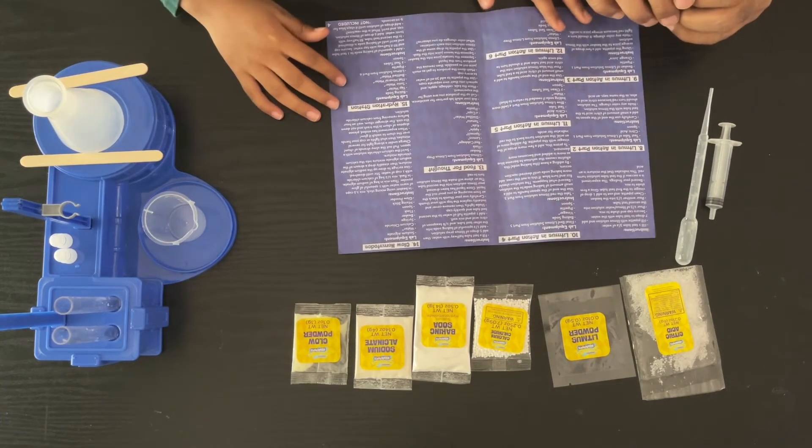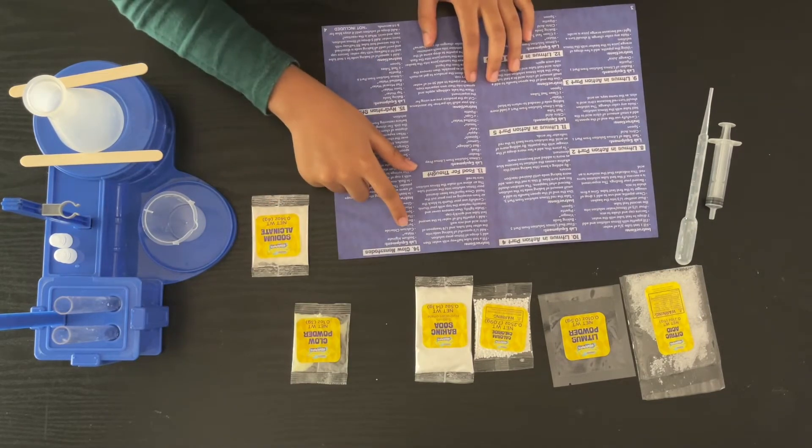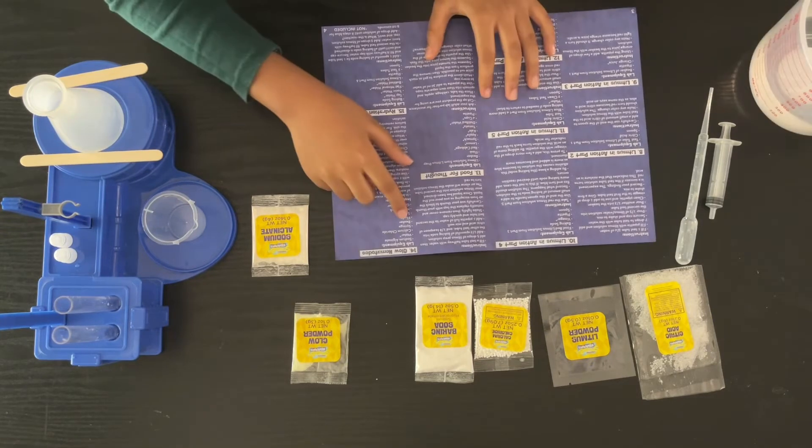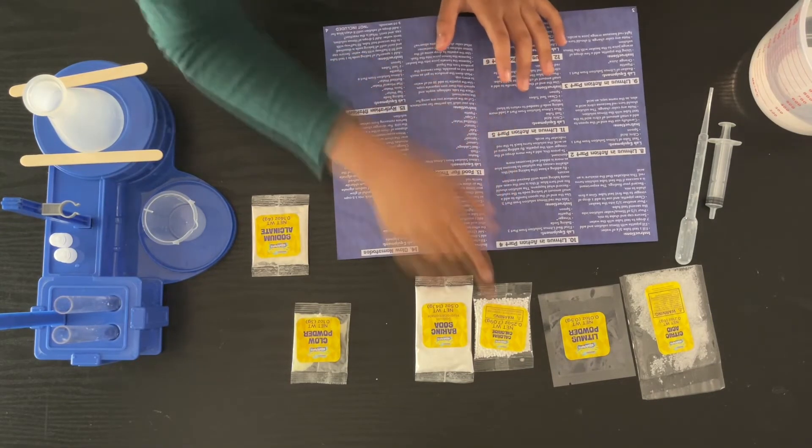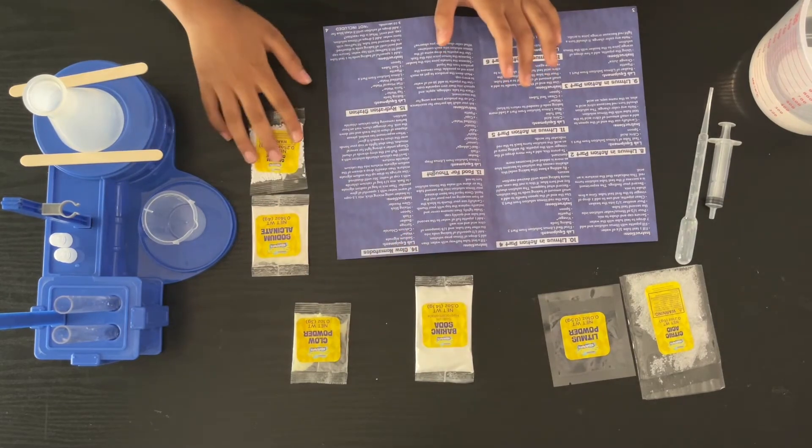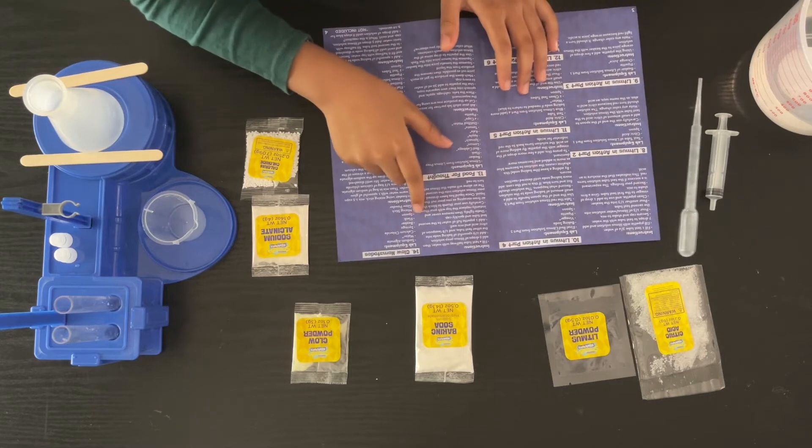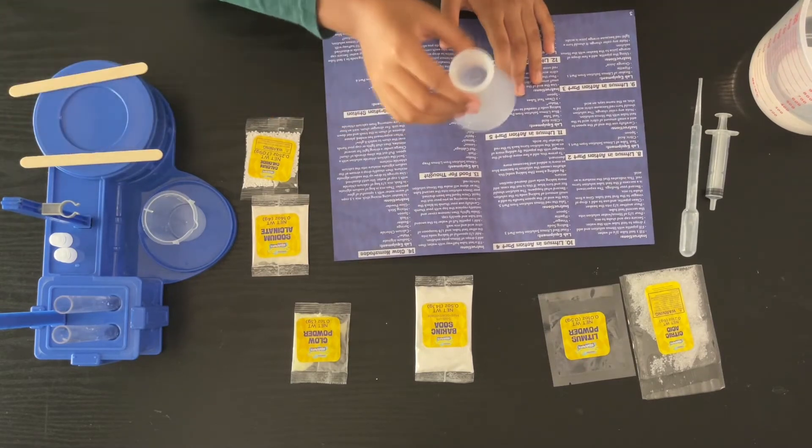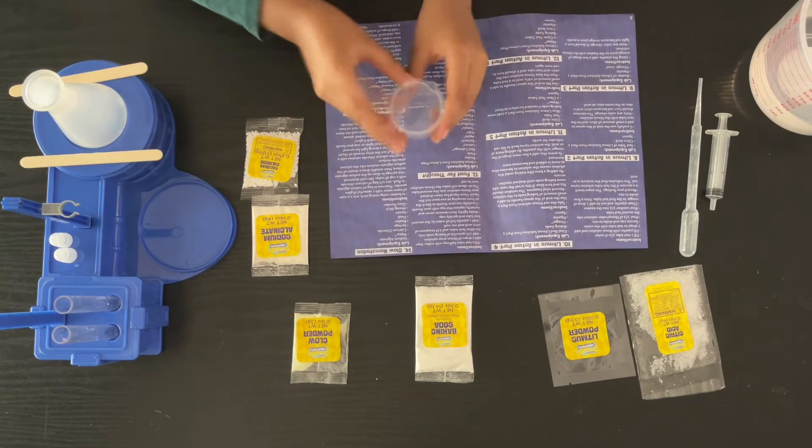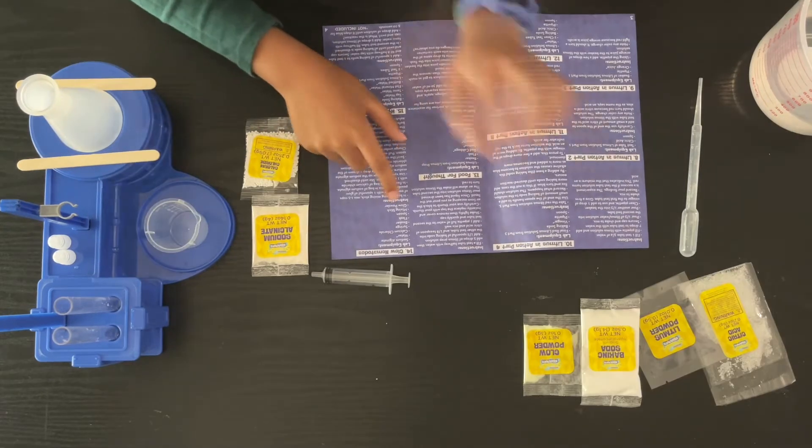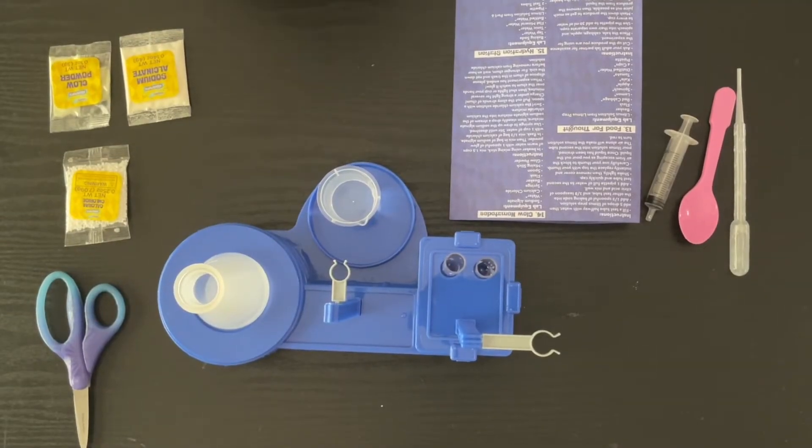We'll be needing sodium alginate, water, calcium chloride which is over here, a syringe, this beaker over here, the flask, and glow powder. Let's get started with the experiment.